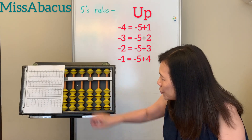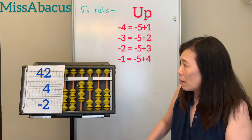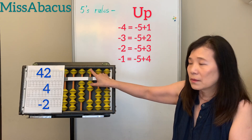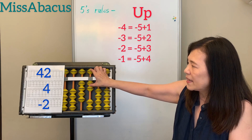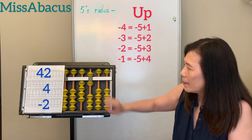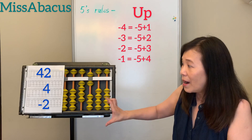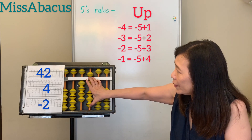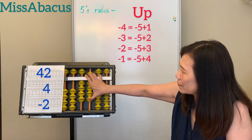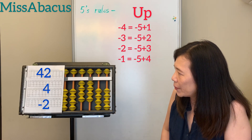Next problem: 42. Plus 4 — we learned last week. For the 4: down 5, down 1. Then minus 1, minus 2 — today's rule: up 5, up 3 for the 2. Answer: 44.